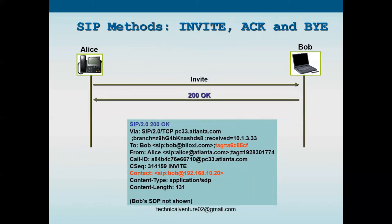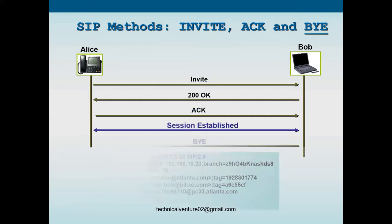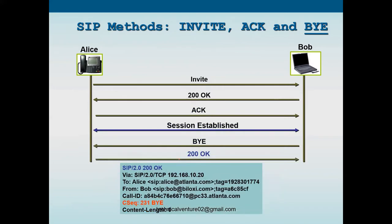Then there will be a 200 OK message from Bob to Alice, containing the same things — it will send the 200 OK via the CUCM server. After that, there will be an ACK message from Alice to Bob. The ACK contains Bob's IP address, and the Via header contains the CUCM IP address. After that, the session is established.